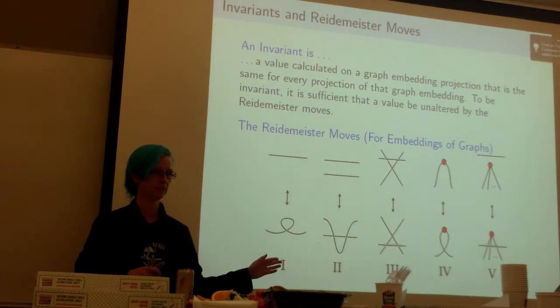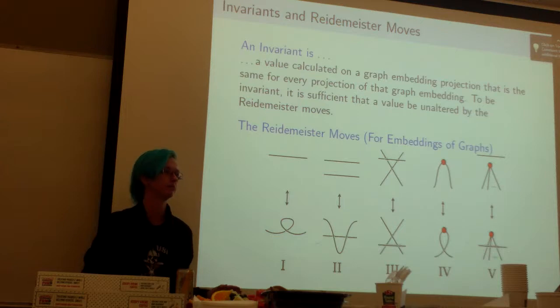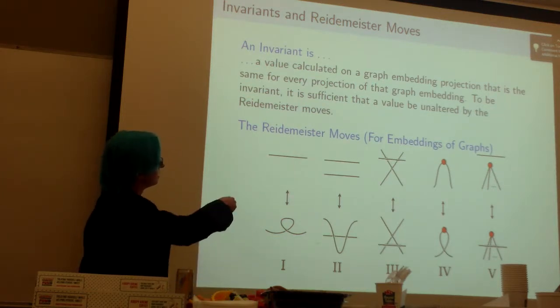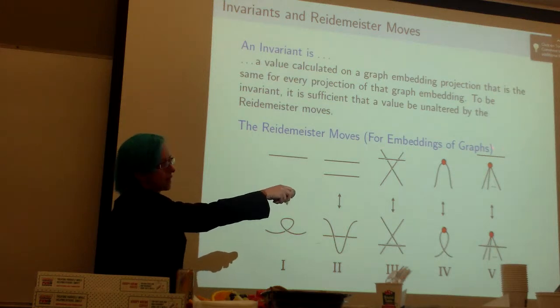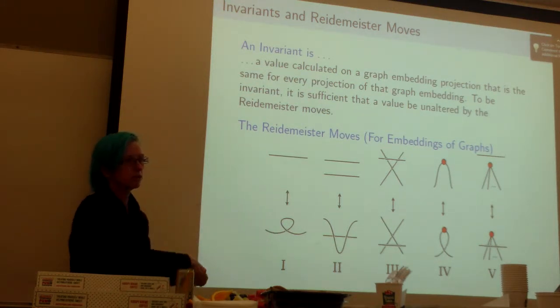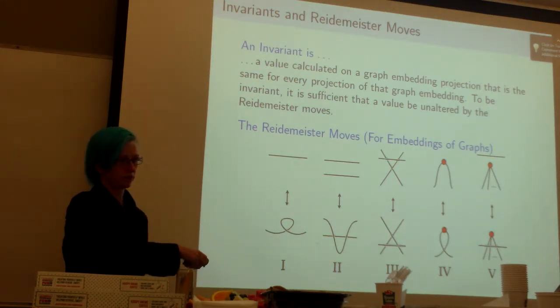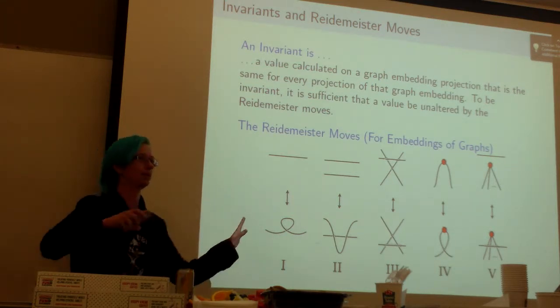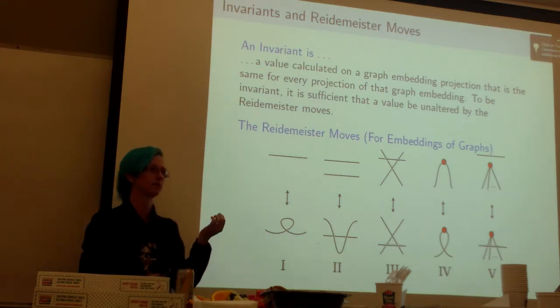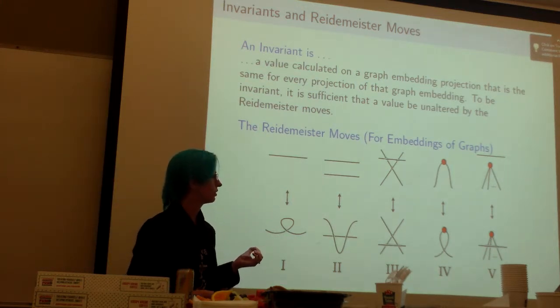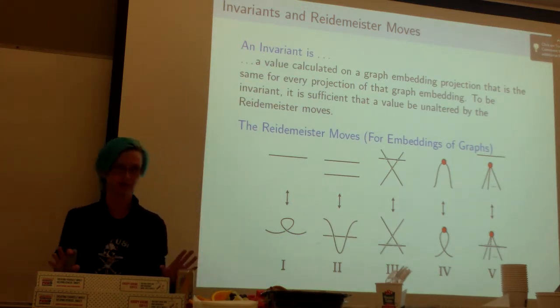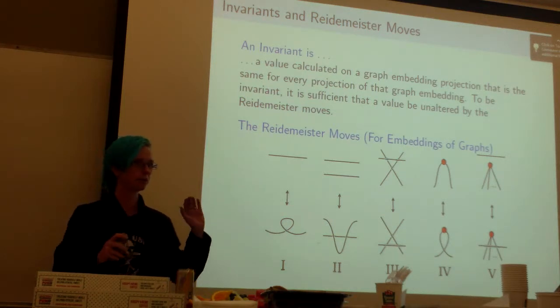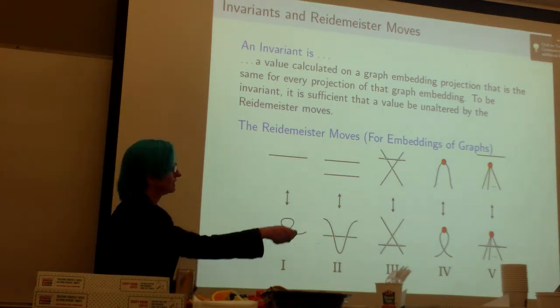You'll see there are two different types here. There's a reason why I put 'for embeddings of graphs' because the original Reidemeister moves come from knot theory, and these three apply to any old knot, which is a tangled string in a loop. Those don't have anything to do with vertices.